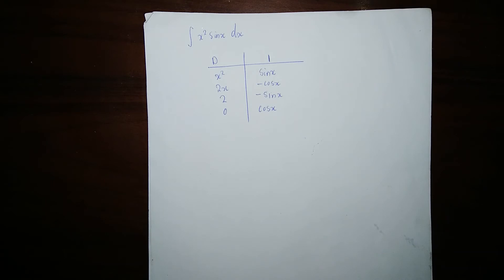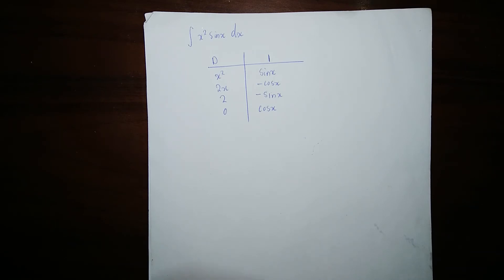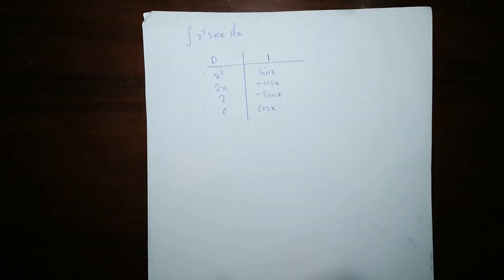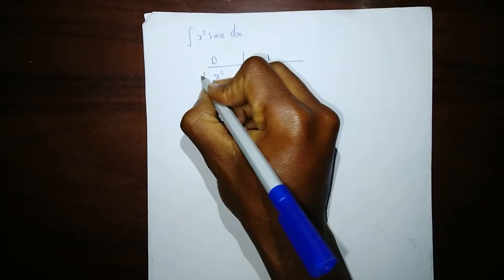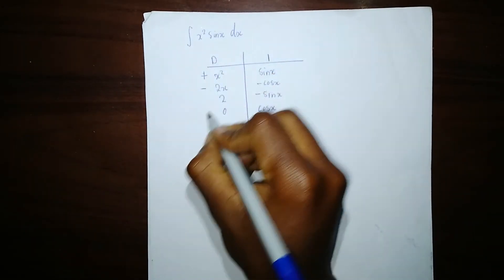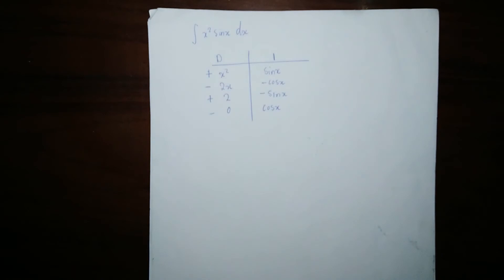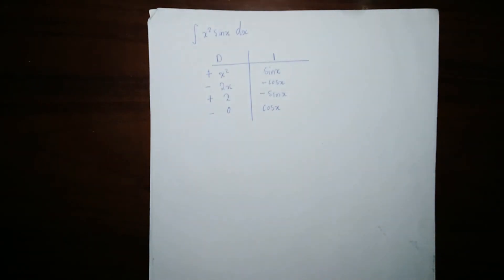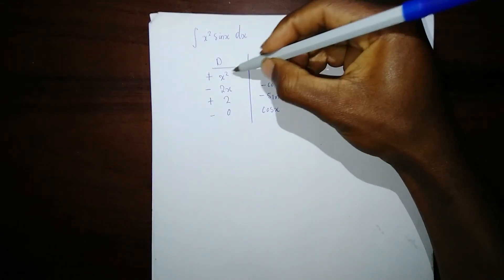Once you're done with this stage, you're going to include signs alternating: plus on the first expression, then negative, then plus, then negative. The final stage, you're going to cross multiply.